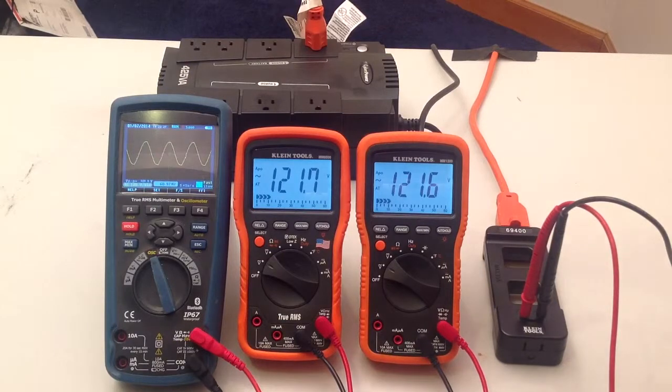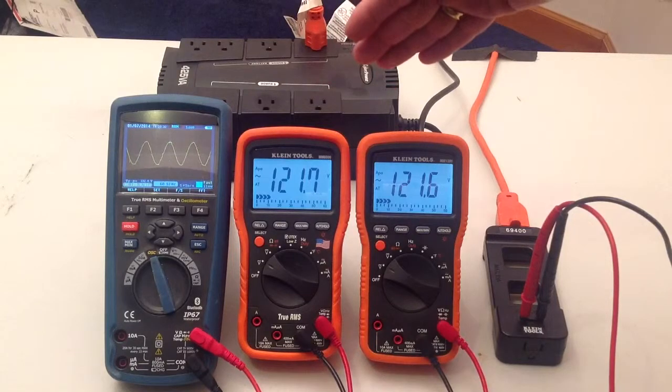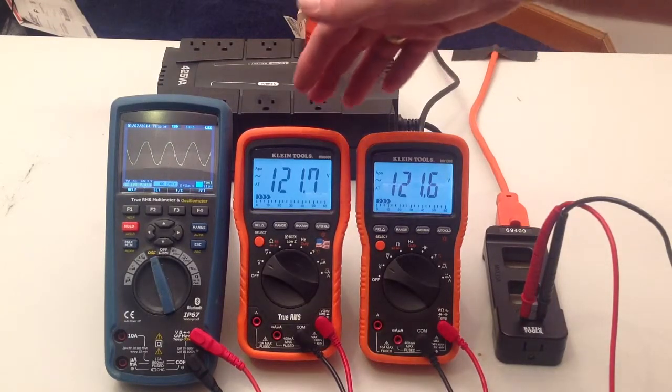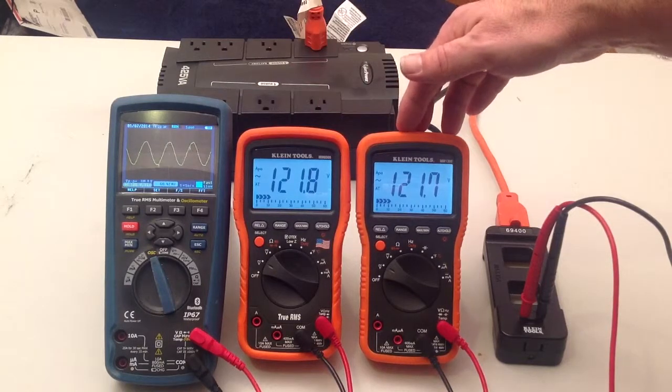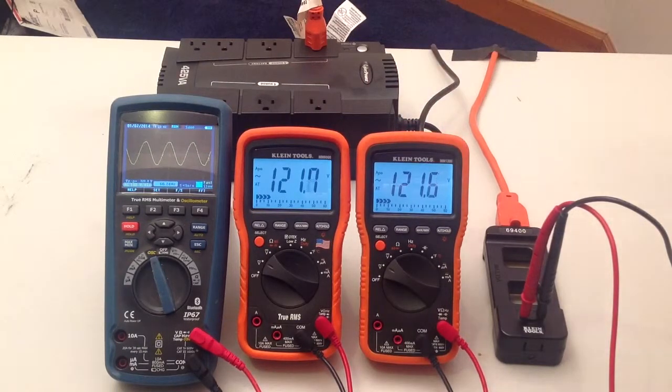When you have a perfect sine wave like this, an RMS meter and a true RMS meter show the same voltage. Here I have an MM6000 true RMS meter and an MM1300 RMS meter. They are measuring essentially the same voltage, within a tenth of a volt. Sometimes they are measuring the same voltage.